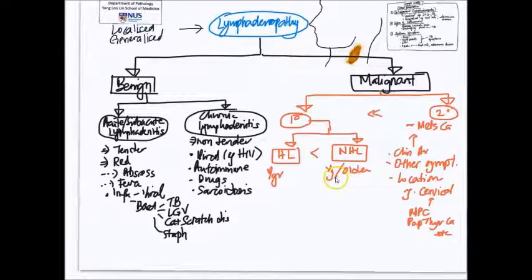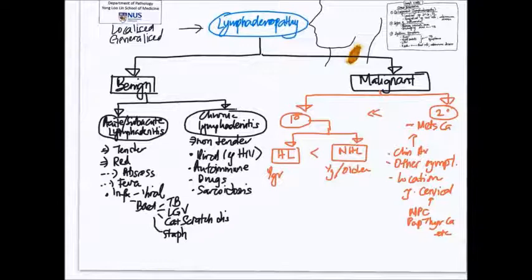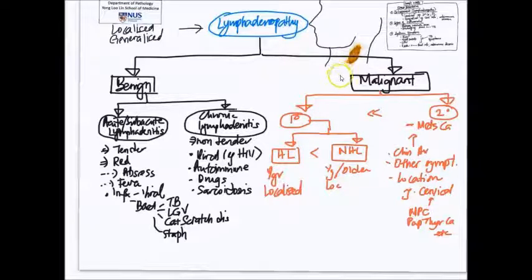Whereas for non-Hodgkin lymphoma, the age range can be very wide, from young all the way to elderly. Apart from that, an important distinction is that usually for Hodgkin lymphoma, it occurs in the localized region of the body, for example, in the neck lymph nodes. And when it spreads, it spreads contiguously to the next closest site. Whereas in non-Hodgkin lymphoma, it can be localized to a certain region, or it can be generalized at clinical presentation.